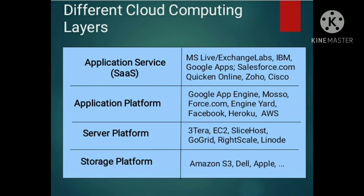Here is a point of different cloud computing layers with relevant examples. Number one is application services — in this layer we may use Microsoft Live, Exchange Labs, IBM, Google Apps, Quicken Online, Cisco. Number two, application platform — we can use Google App Engine, Maso, Force.com, Engineered, Facebook, Heroku, etc. In server platform: 3Tera, EC2, Slicehost, GoCrete. And the last one is storage platform: Amazon S3, Dell, Apple and so on.